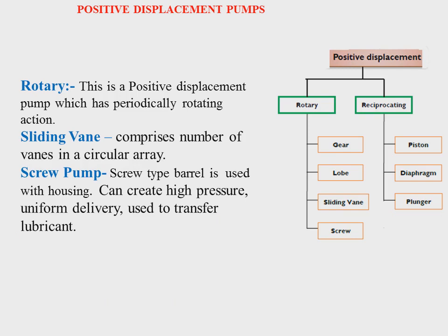The rotary type pump is basically a positive displacement pump which has a periodically rotating action. It has a rotating element, sometimes known as a barrel. The sliding vane pump comprises a number of vanes in a circular array within a barrel. The role of the vane is to suck and deliver the working fluid from the suction side to the delivery side.